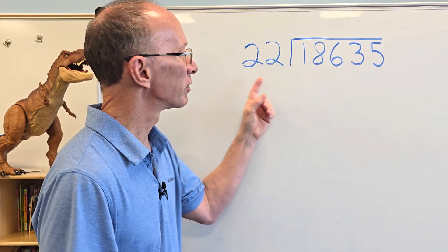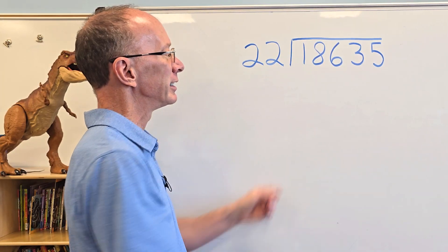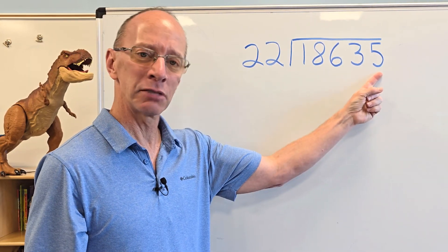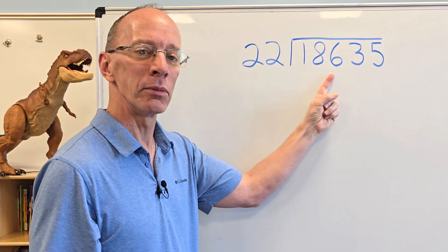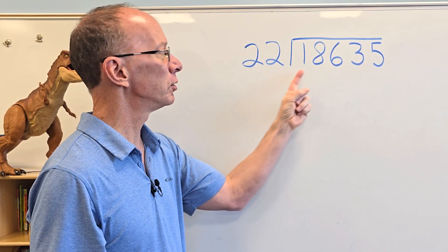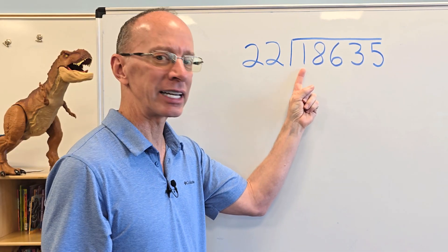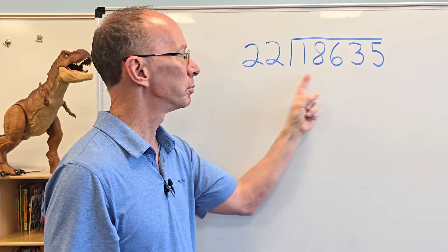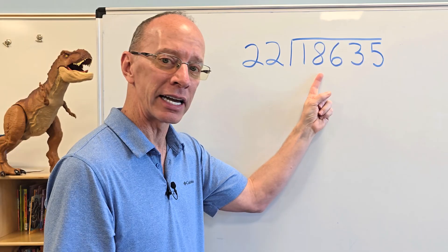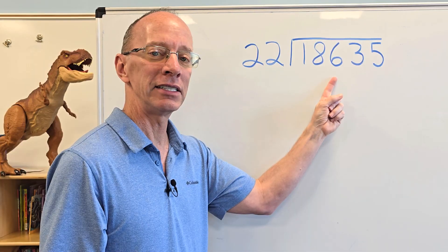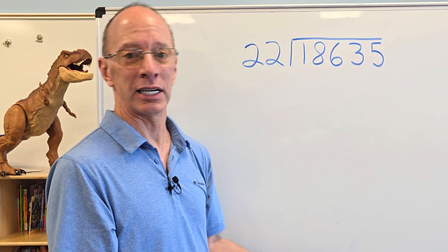All right. So first of all, how do I start? I need to take this number right here and see how many times I can put it into this big number. We're just going to take one number at a time. Can I put 22 into 1? Just can't, can you? Can I take 22 and put it into 18? I still can't. Can I put 22 into 186? You can, but how many times?